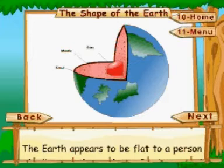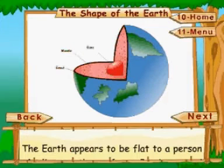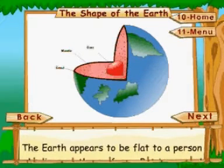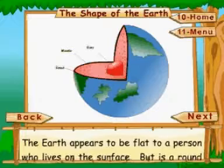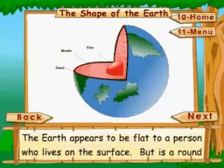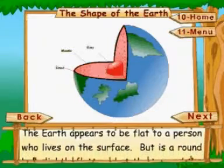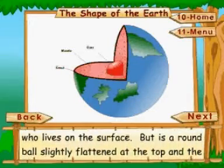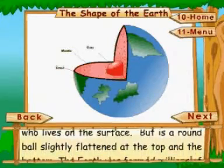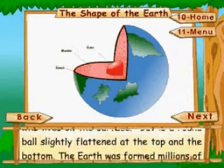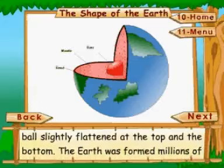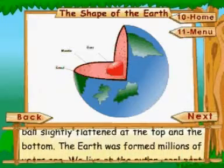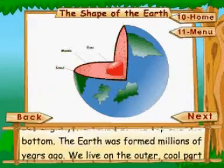The earth appears to be flat to a person who lives on the surface, but it is a round ball, slightly flattened at the top and the bottom. The earth was formed millions of years ago.